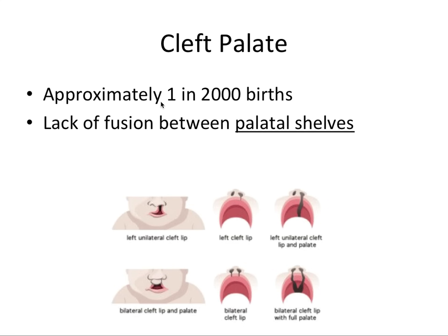Cleft palate is approximately one in 2,000 births — a little bit more rare than cleft lip — and it's a lack of fusion between palatal shelves. Looking at the roof of the mouth, a unilateral cleft will go off to one side and coalesce with one of the nostrils, while a bilateral cleft will split the palate in two with the intermaxillary segment separated. This involves the middle nose, the philtrum, middle of the lip, and the intermaxillary segment, which is part of the medial nasal process.